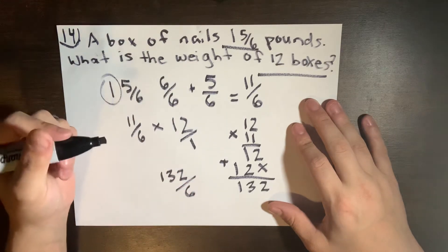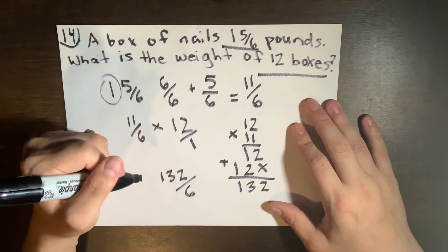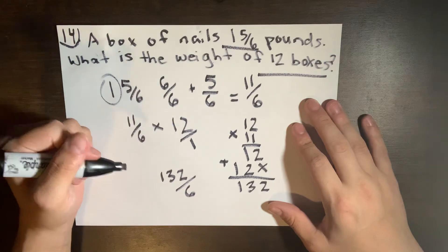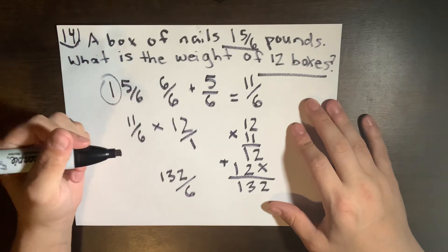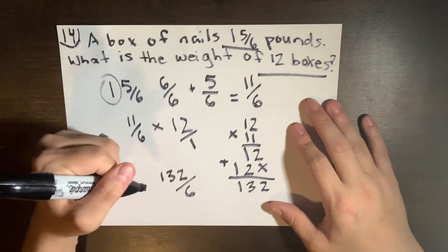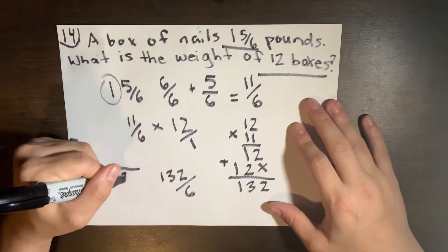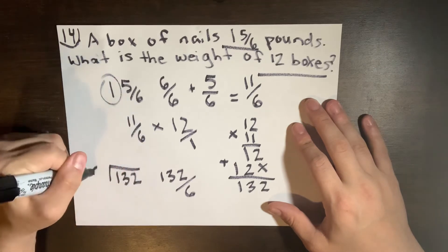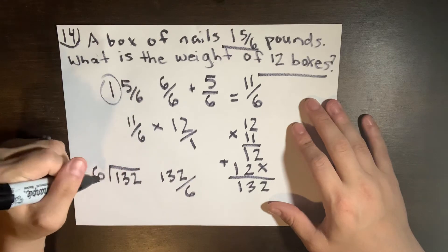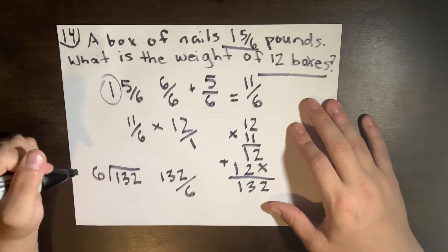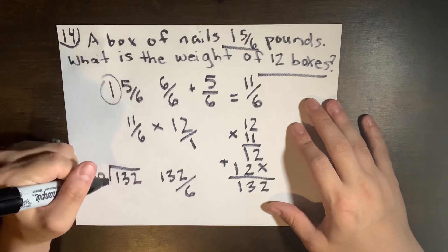I've stated it before, it's always going to be the same. Whenever you get a fraction, you always want to simplify it down to the lowest number. So this can actually be divided into one another. We're going to do 132 divided by 6.